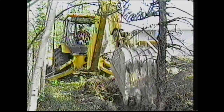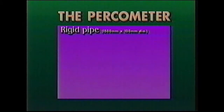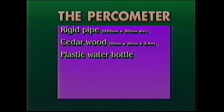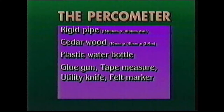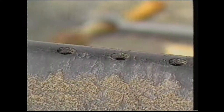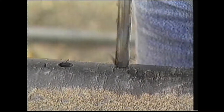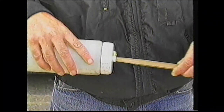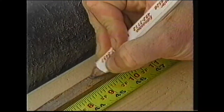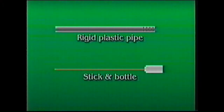The PERC rate can be determined by building a simple percometer using the following materials: one 1500 millimeter length of rigid plastic pipe, 100 millimeters in diameter; one piece of 10 millimeter by 10 millimeter by 2.4 meter cedar wood strip or 1.5 to 3 millimeters diameter of stiff wire; one plastic water bottle with watertight lid; hot glue gun, measuring tape, utility knife and fine-tipped felt marker; and drill and 13 millimeter drill bits. Begin by drilling six rows of holes in the bottom 300 millimeters of the pipe. Using the utility knife, cut a small X dead center on the lid of the water bottle and insert the wood strip or wire into the X until it touches the bottom of the bottle. Hot glue the area where the wood enters the bottle lid and let it harden. Measure and mark five millimeter increments on the top one meter of the wood strip. You have your percometer.